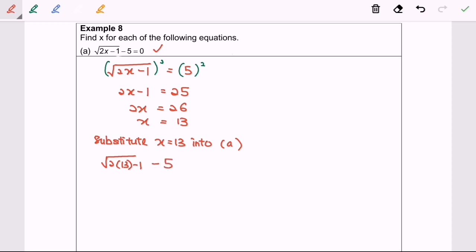As we all know, 2 multiplied by 13, we will have 26 minus 1. We will have square root of 25 minus 5. Square root of 25 is 5 minus 5, and we will have equals 0.